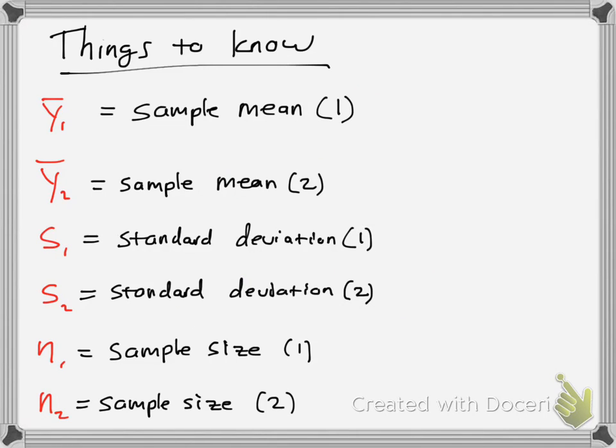So some things you should know for terms that we're going to be dealing with. So ȳ₁ bar is our sample mean for our first sample set, and we have a second sample mean, which is denoted as ȳ₂ bar. And then we have our standard deviation s₁ for the first sample and s₂ for the second sample. And then we have our sample size, n₁ for the first sample and n₂ for the second sample.